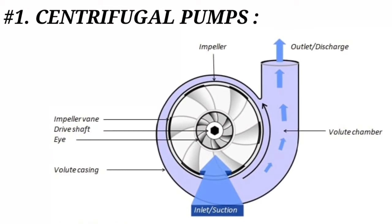Centrifugal pumps are available in alloys for corrosive services. Advantages of centrifugal pumps include being the best pump choice for lower viscosity thin liquids and high flow rates, with no pulsations that may be found in some positive displacement pumps.